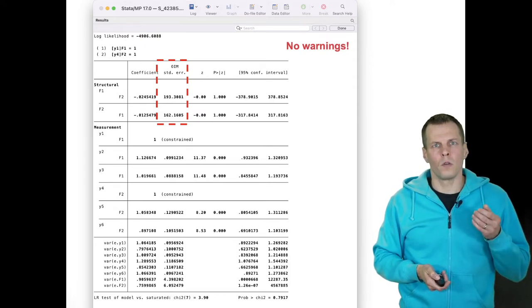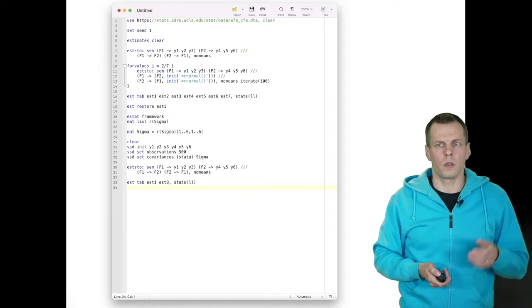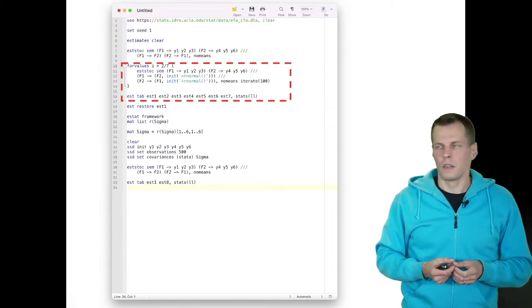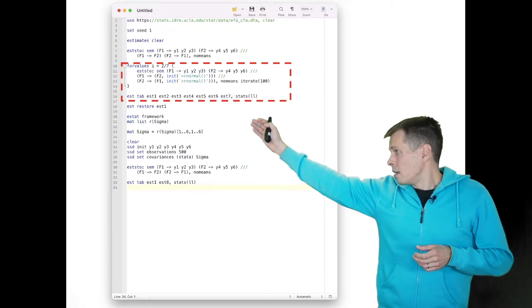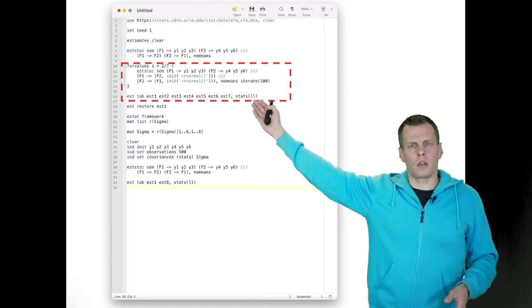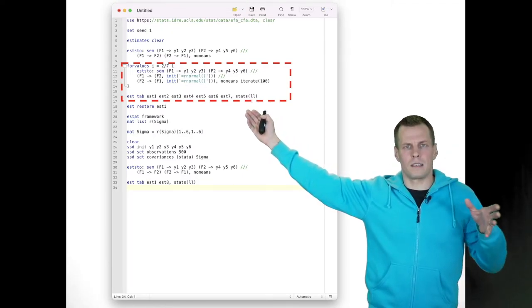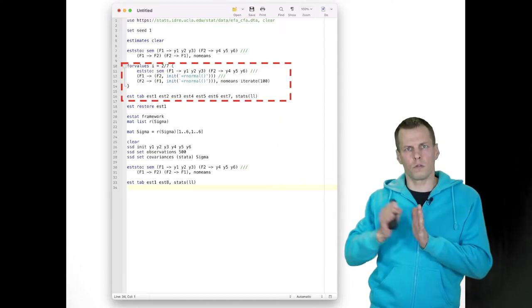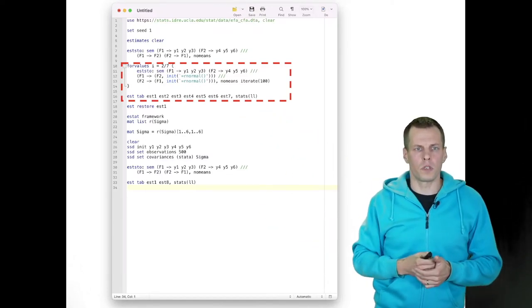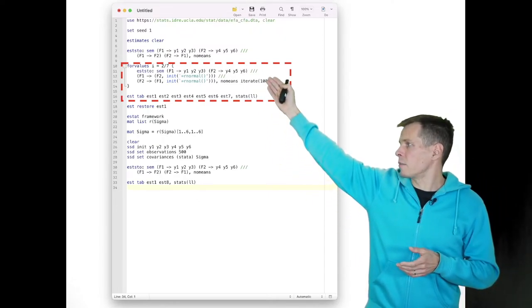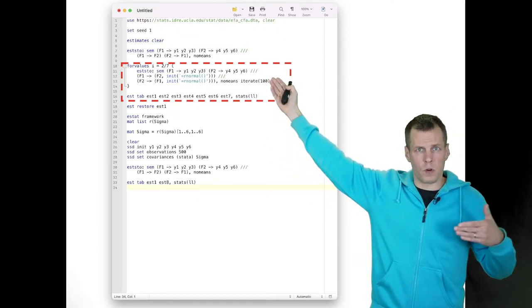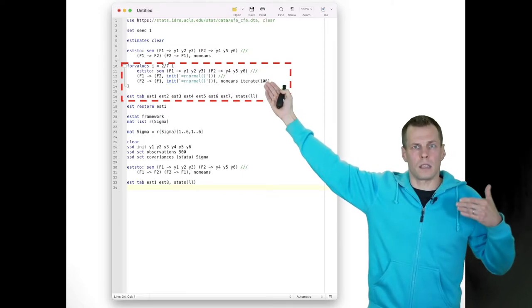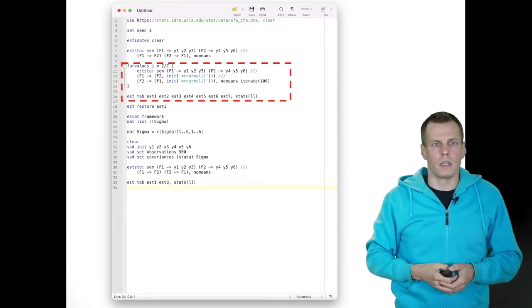Let's proceed with the diagnostics. So we'll first do this loop here. So I will estimate six more models. So the first model is one and then models two through seven, six more, are using random starting values. I set seed in the beginning of the file to make this reproducible to ensure that I will always get the same results if I rerun this do file.